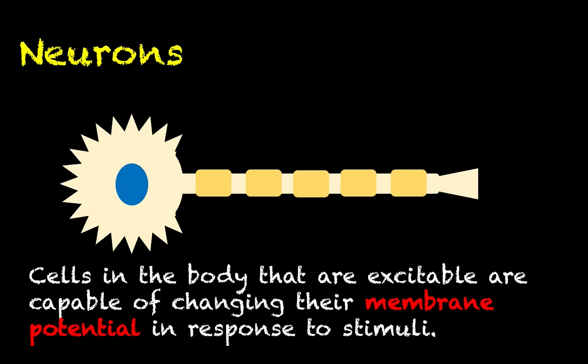Let's start by talking about neurons — just a gentle introduction in this video. In a future chapter where we actually cover the basics of the nervous system, we will go through this in more exquisite detail. So neurons are specialized cells in the body that are excitable. Pretty much every cell in the body has something called a membrane potential. Neurons are part of a select group of cells that are capable of changing their membrane potential in response to various stimuli, like the stimuli we talk about in homeostasis loops.